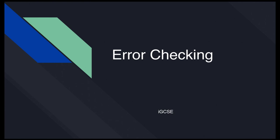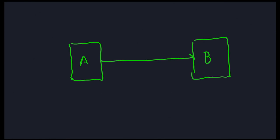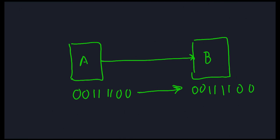Today we're going to talk about error checking, specifically error checking in the context of transmitting data between two devices. Let's say we've got device A and device B, and we want to transmit some data from A to B — for example, the binary value 00111100. We want to make sure that when it arrives at B, it looks exactly the same. That is the point of error correction.